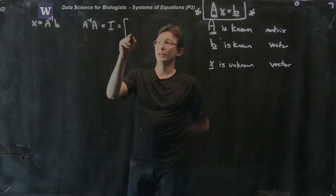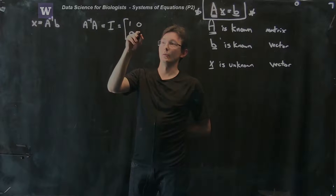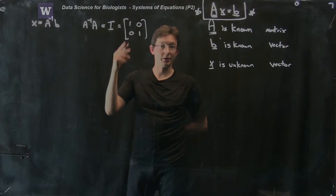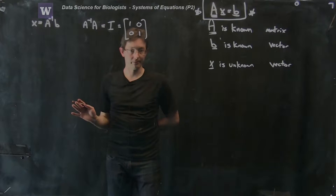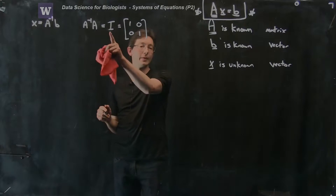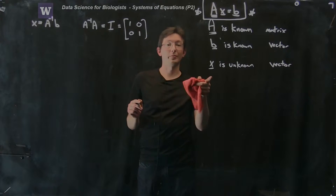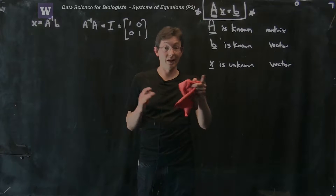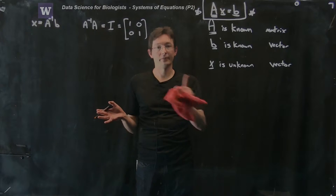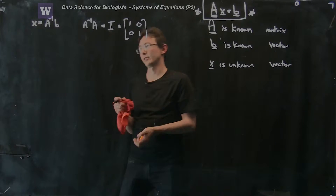Now, the inverse of A is a very special matrix such that A inverse times A equals the identity matrix. This equals a matrix of 1, 0, 0, 1 in the two-by-two case. It's a really special matrix because any time I take my identity and multiply it by any vector x, I get x back.